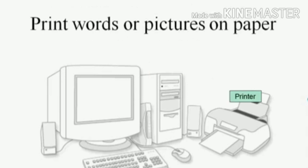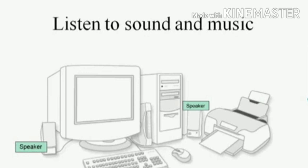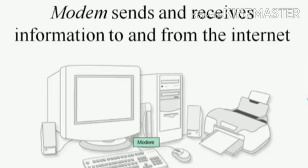You may have a printer nearby or across the room — it's what prints the words and pictures that you type on paper. You might also have some speakers, which are just like stereo speakers for voice, music, and other sounds.